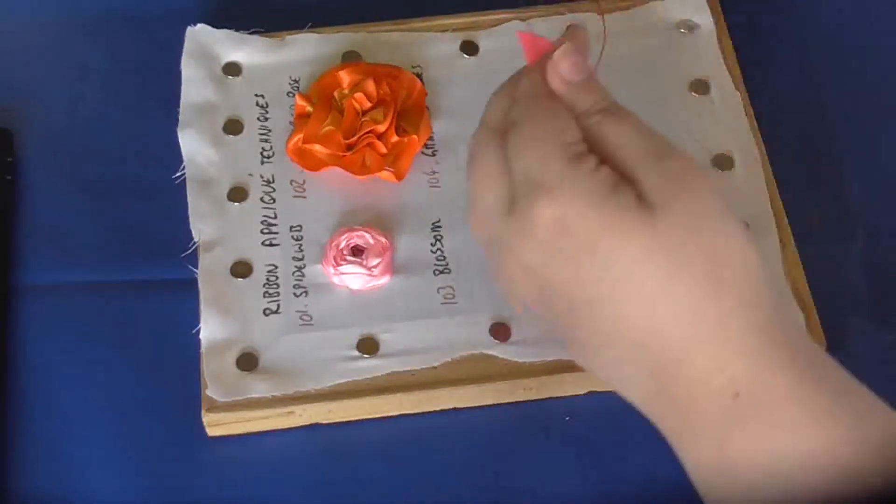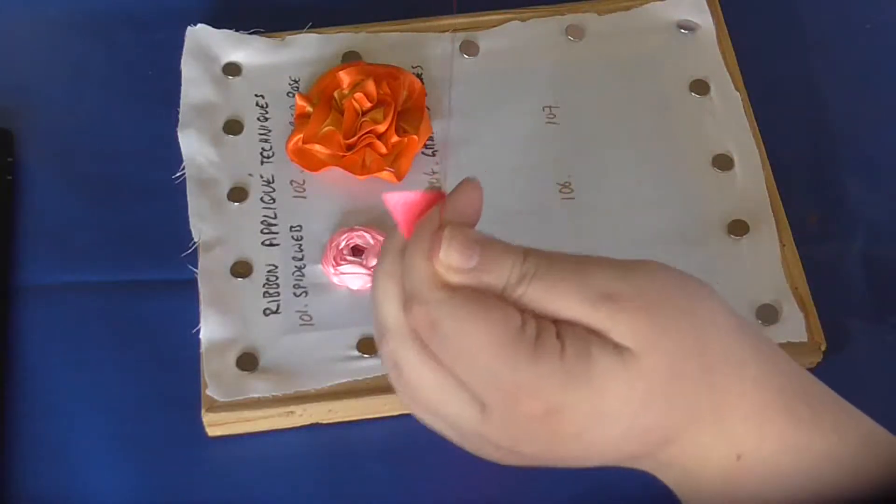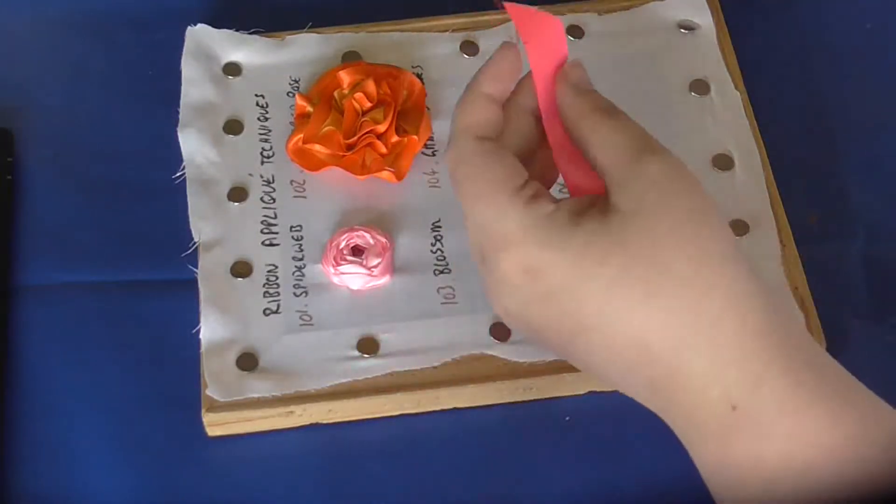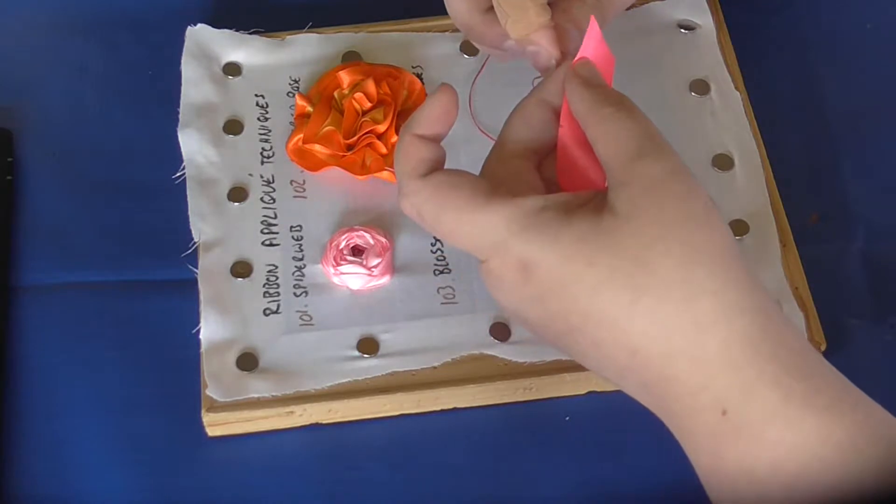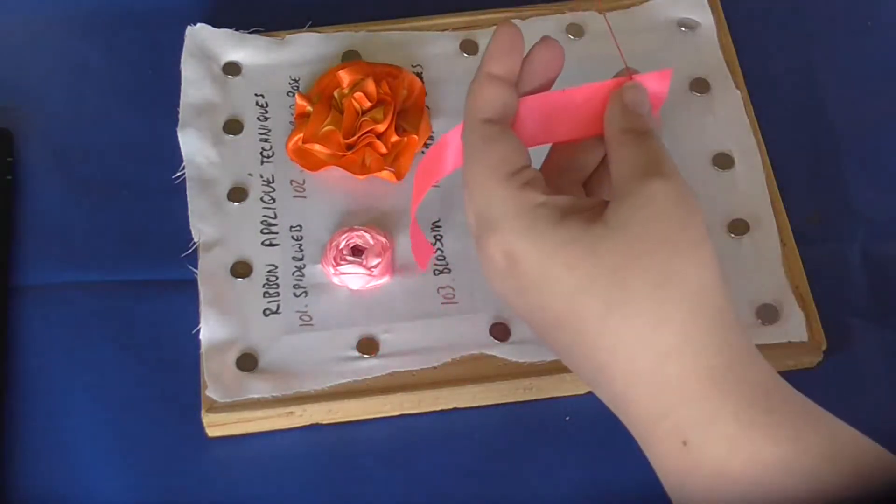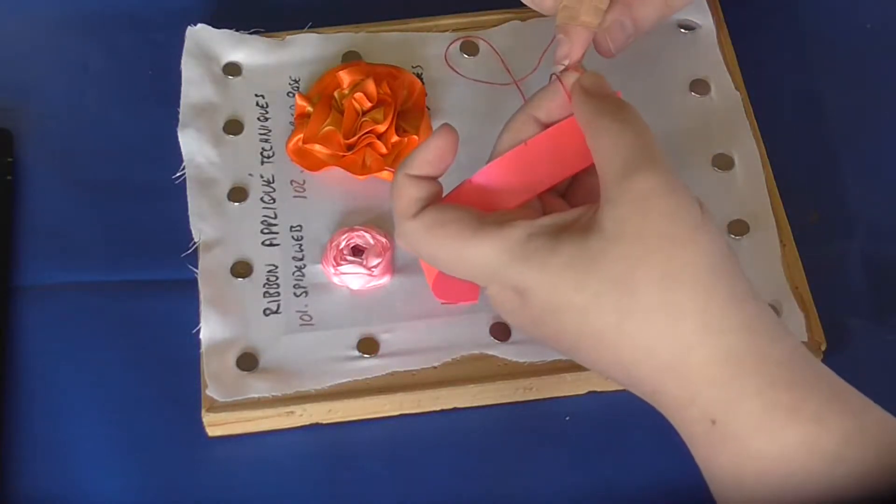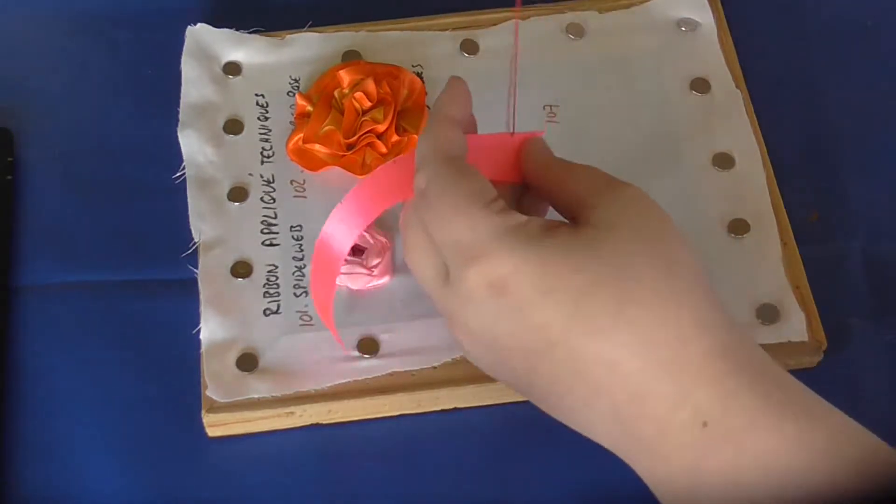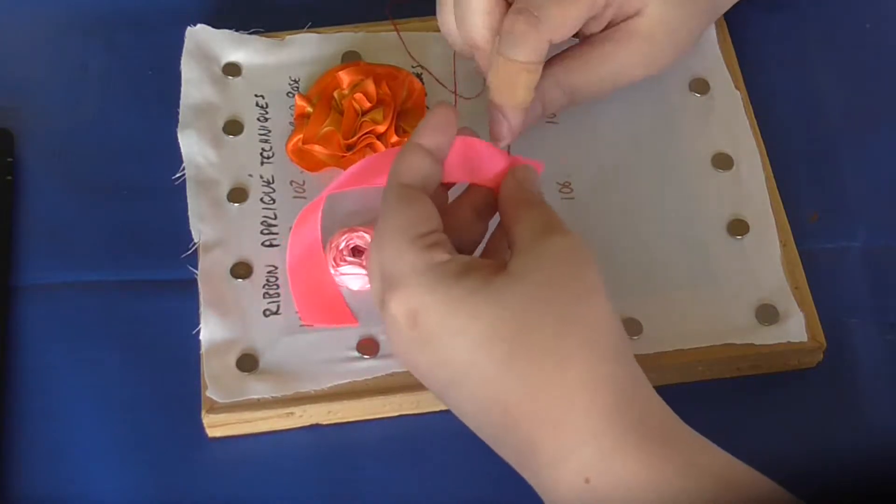Take some thread. This works better with rayon or silk thread because it's smoother and less likely to catch in the ribbon. Start from one of your marks, make a loop and tie it off.